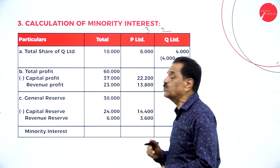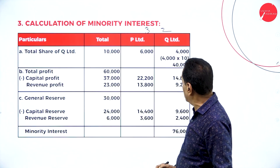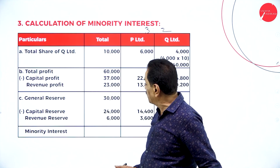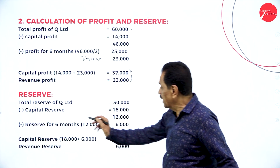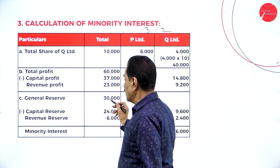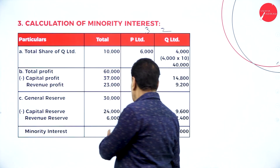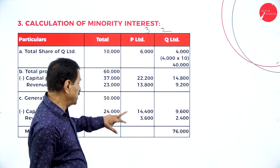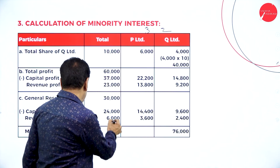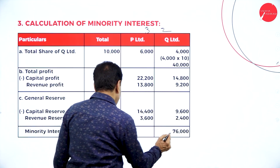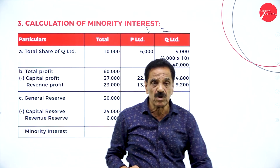Revenue profit of 23,000 is also divided in the ratio of 3 to 2: 3/5 equals 13,800 (to P-Limited) and 2/5 equals 9,200 (to minority). General reserve of 30,000: capital reserve portion is 24,000 and revenue reserve is 6,000. Divided in ratio 3:2 — 3/5 of 6,000 is 3,600 (to P-Limited) and 2/5 is 2,400. The entire minority interest of 76,000 goes to the liability side of the balance sheet.